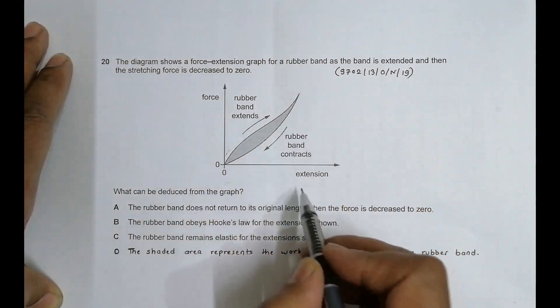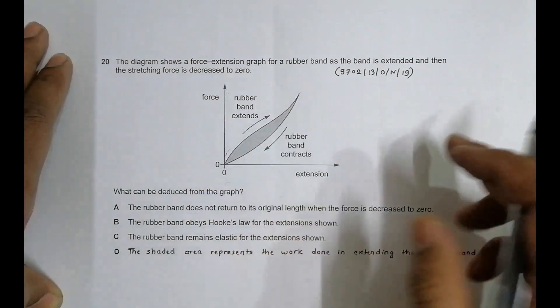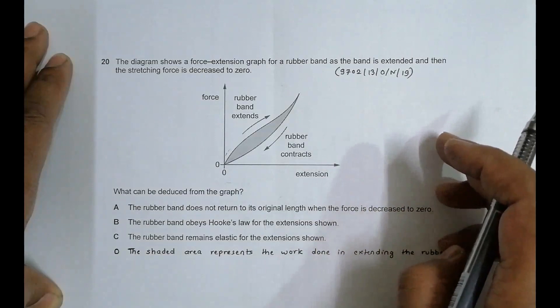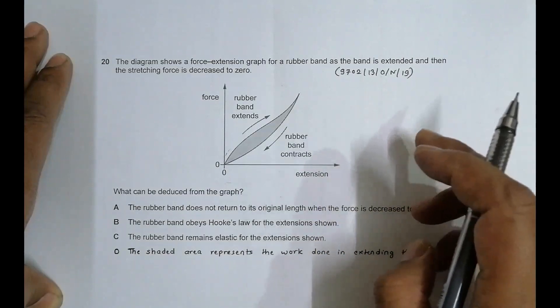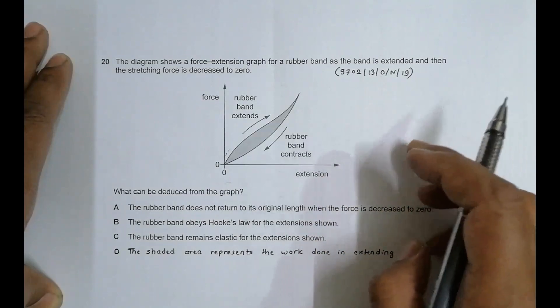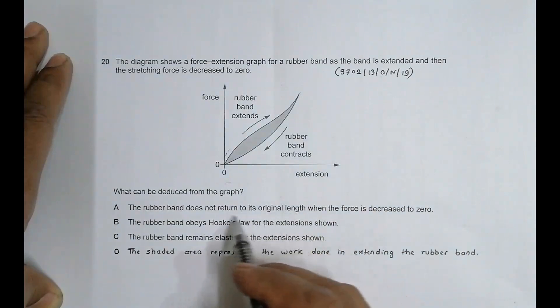When the force has been reduced to zero, the extension is zero. Zero means that there has been no change in length, so that means the original length should have been regained. So this is not a true case, that's wrong.